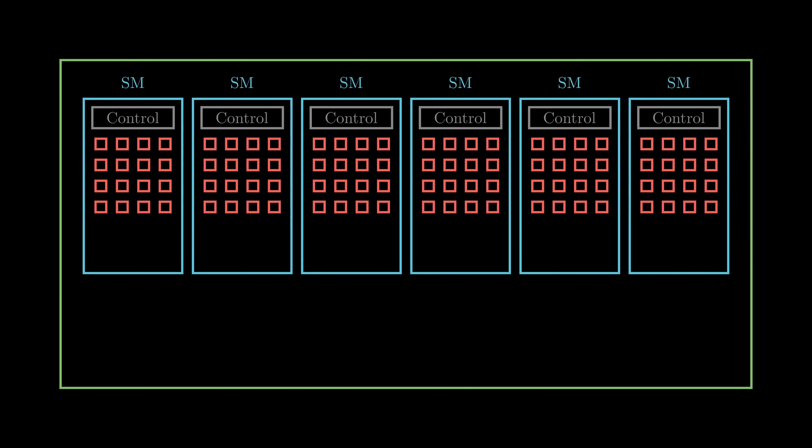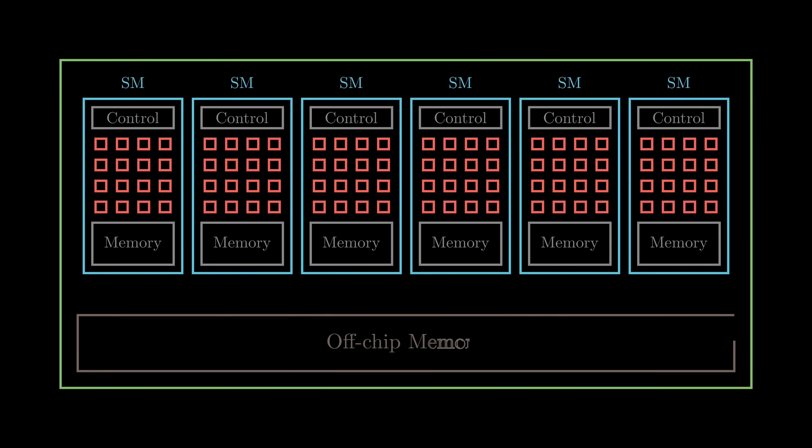The GPU is organized into an array of streaming multiprocessors. Each SM has several processing units called CUDA cores that share the same control logic and a small on-chip memory unit. There is also a larger off-chip memory called global memory or VRAM. The matrices are stored in the global memory.